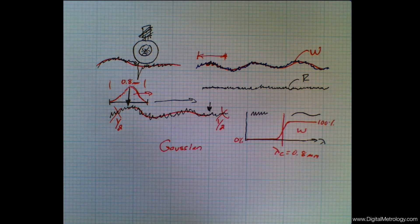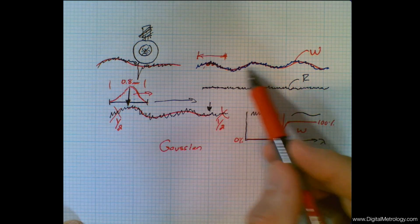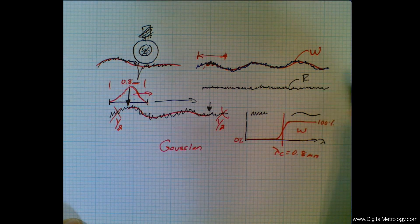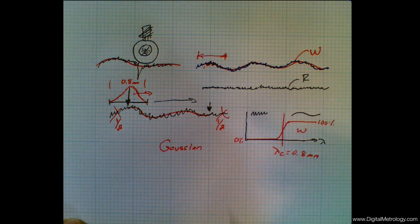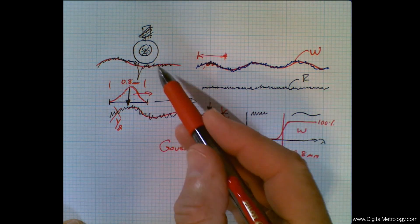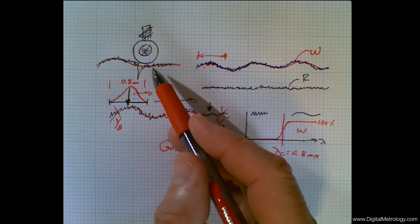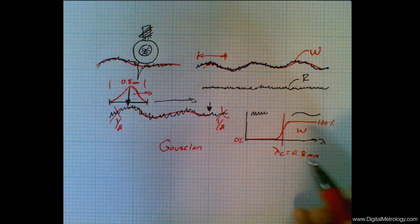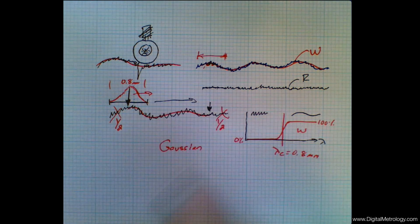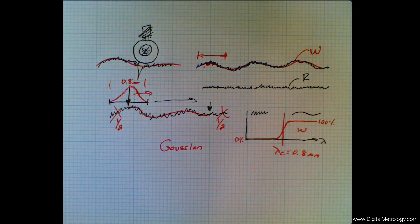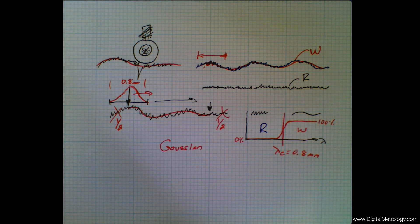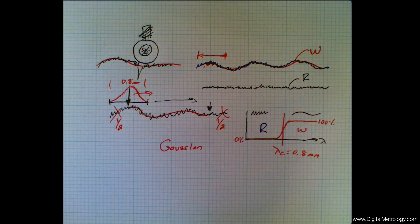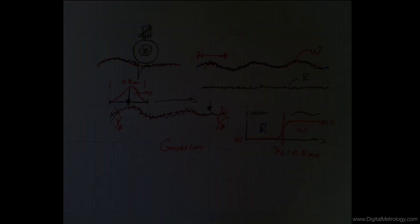If you're looking inside your gauge wondering what these things mean, know this: first, we need to filter in order to understand roughness — we create a waviness profile that gets subtracted, and the leftovers are roughness. We want this separation to be as sharp as possible, just like we want a car ride to be as smooth as possible without extra bouncing. To do this mathematically we use a Gaussian filter, which gives us the best possible separation of roughness and waviness. There are other filters like the robust filter discussed in another video. If you have questions about filtering or interpreting your data, feel free to reach out at digitalmetrology.com.